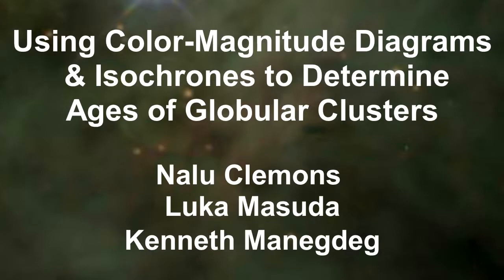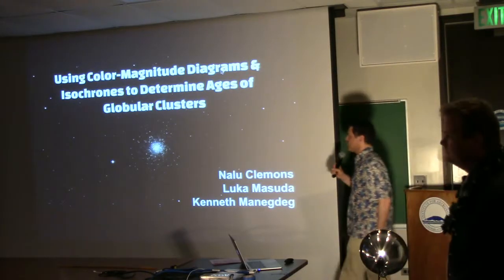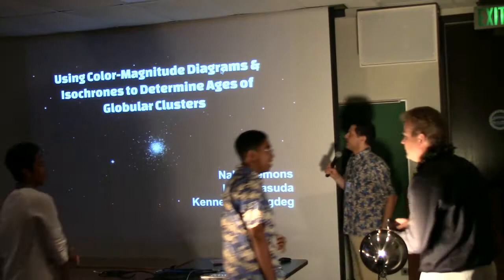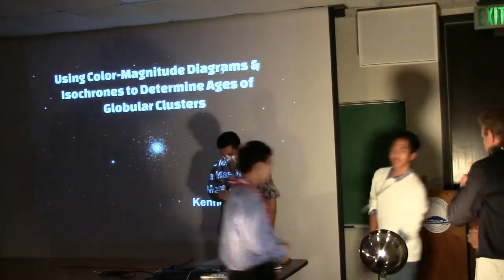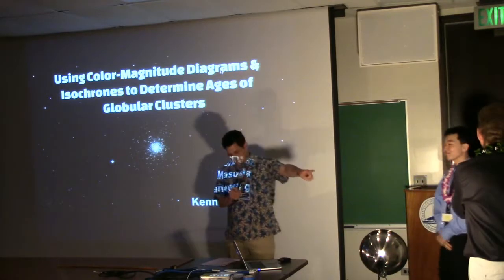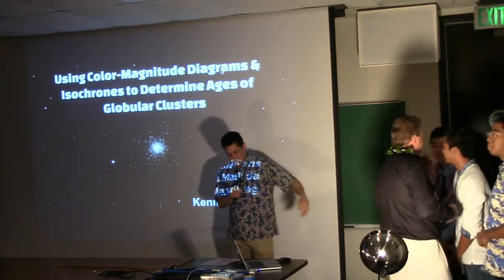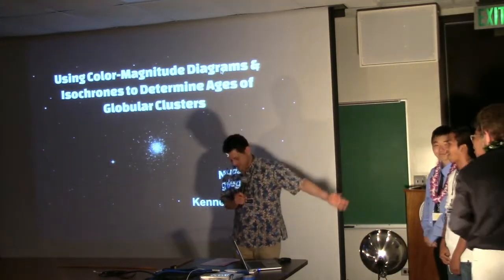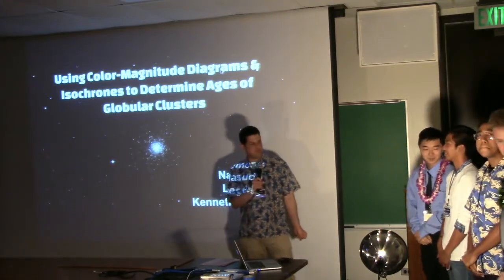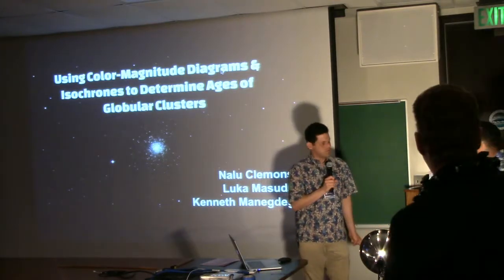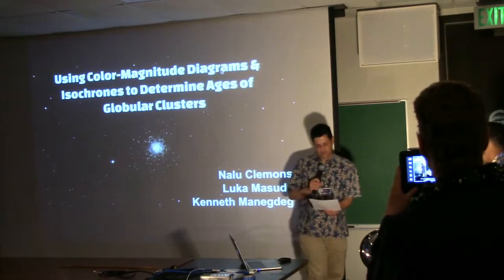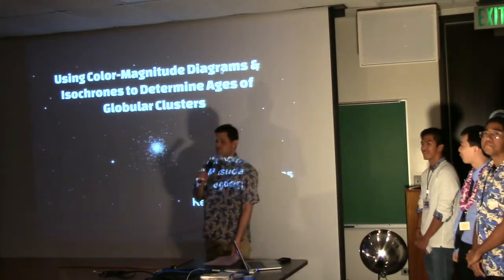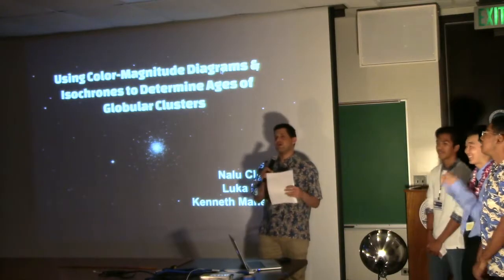Moving out to globular clusters, which are probably about as far as that Mordor star on average. Our next group is a mix of Maui and Oahu students. We have Nalu Clemens, a first-time participant from Kaiser High School; Luca Masuda, also first-time from McKinley High School; and Kenneth Monegde from Maui High School, participating for the second time. The mentors for this project are undergraduate mentors because the University of Hawaii now has an astronomy program.